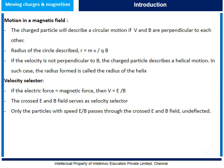Let us understand the cyclotron frequency formula. Cyclotron frequency can be given by QB divided by 2πm.